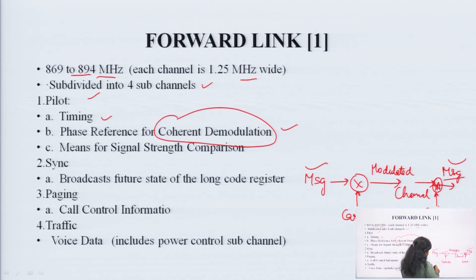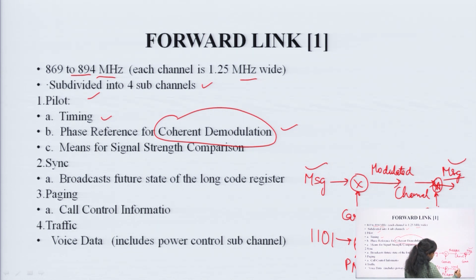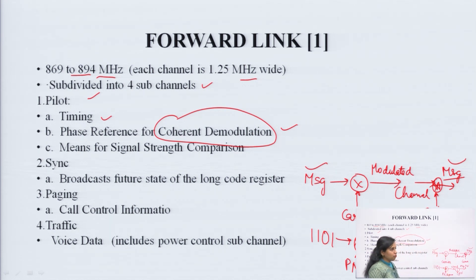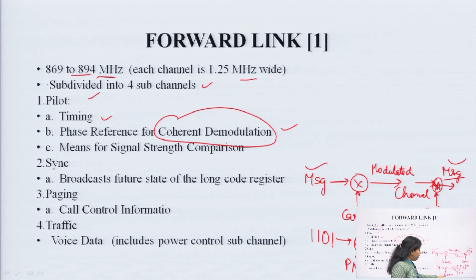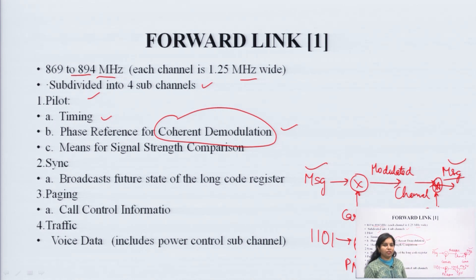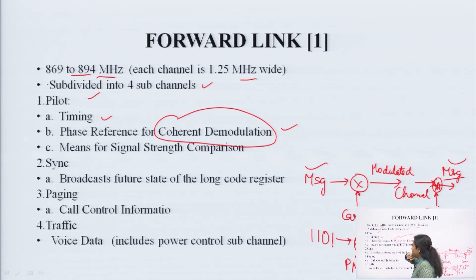In digital communication, modulo-2 addition is performed with the PN sequence. The PN sequence, which is digital in nature and can be 10, 12, 20, or up to 32 bits maximum, must be the same at the receiver side as well. This is known as coherent detection. The pilot carrier is also used for signal strength comparison.